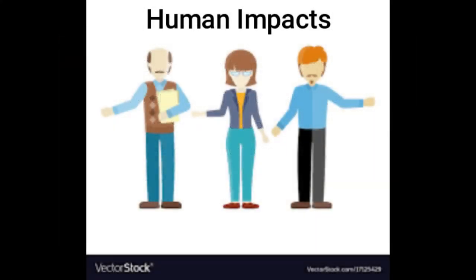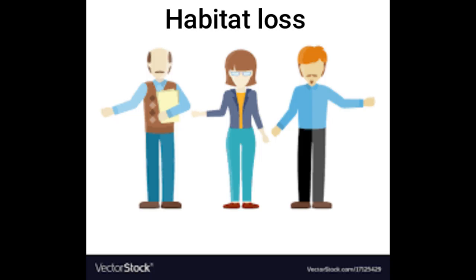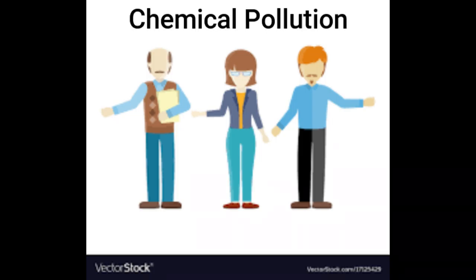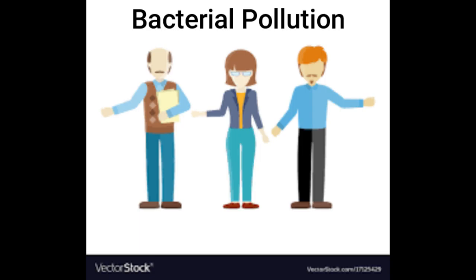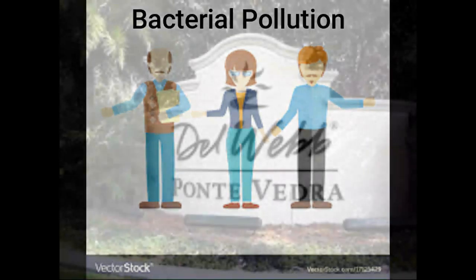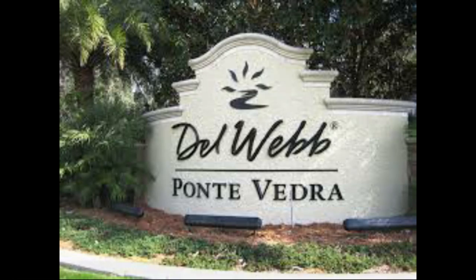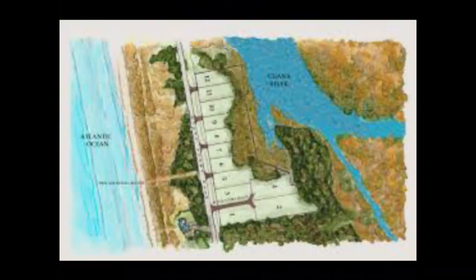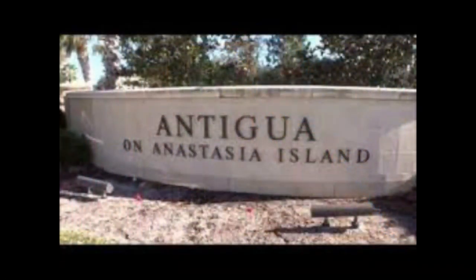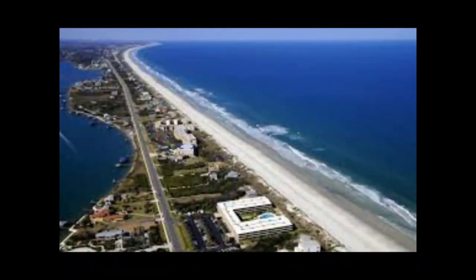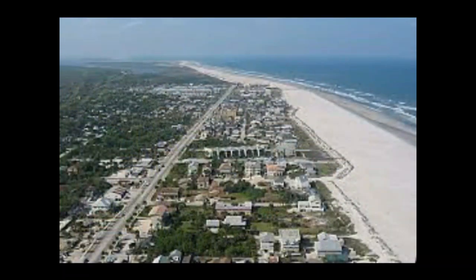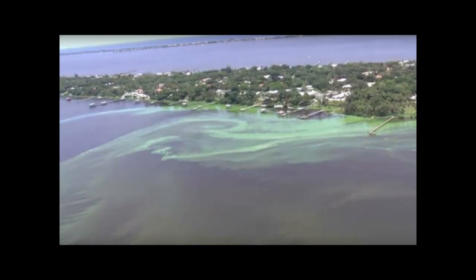Coastal systems are threatened by human activity. The most critical threats are habitat loss, chemical pollution, and bacterial pollution, with habitat loss being the greatest. The barrier islands and maritime forests in particular have already been extensively developed and have been one of the most desirable areas to live. Human habitation brings roads, air and water pollutants, change in nutrient levels due to human waste, and introduction of non-native species.